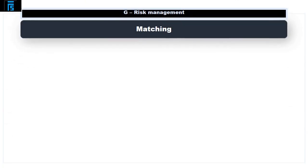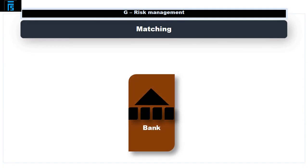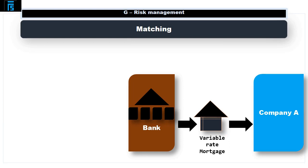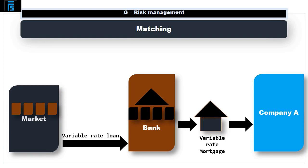Firstly, let's consider matching. Suppose I'm a bank and a customer has come to see me to ask about a mortgage on a property. If that customer would like a variable rate mortgage — in other words the interest rate will go up and down in line with market rates — the bank's income will vary depending on what the prevailing rate is. It might be sensible for the bank to finance this mortgage by taking out a variable rate loan itself.